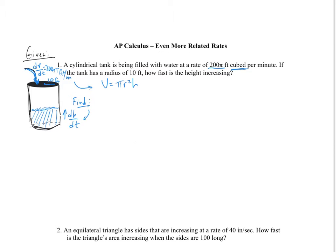In our related rates differentiation process, after listing all the givens and interpreting what's going on, we need to implicitly differentiate each side. The left side gives dV/dt. On the right side, I have two variables, but one of them is staying constant — the radius does not change at all as the tank fills up. So the only thing I need to take the derivative of is h, which gives dh/dt.